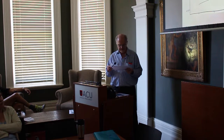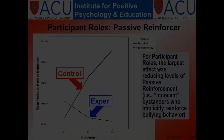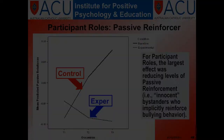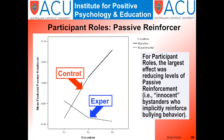For participant roles, the largest effect was reducing passive reinforcement — the so-called innocent bystanders who implicitly reinforce bullying behavior. This was very consistent with our rationale for a whole school approach and suggests that the intervention was successful in changing the school ethos.